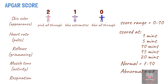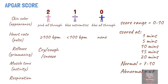A heart rate greater than or equal to 100 beats per minute is given 2 points, while less than 100 beats per minute is given 1 point, and an absent heart rate is given 0 points. For reflex irritability, if the baby cries, coughs, or sneezes, it is given a score of 2. If the baby grimaces or cries feebly when stimulated, it is given a score of 1. And if there is no response to stimulation, it is given a score of 0.